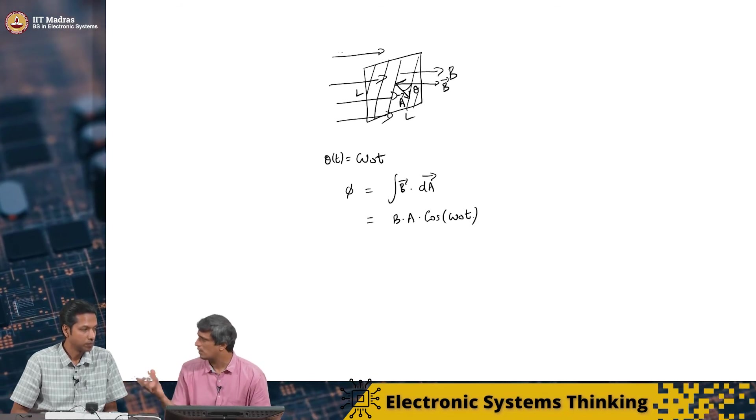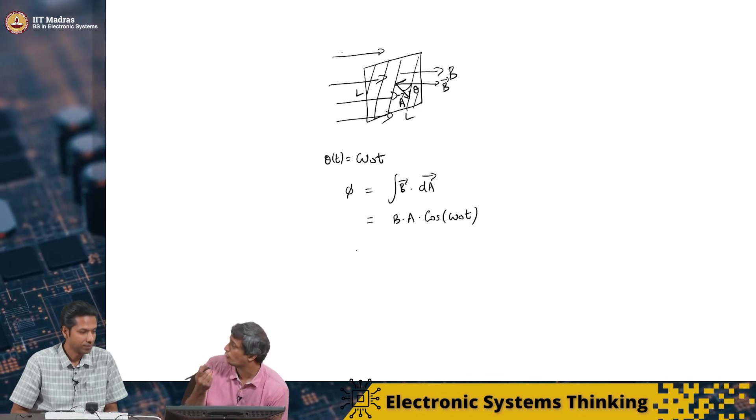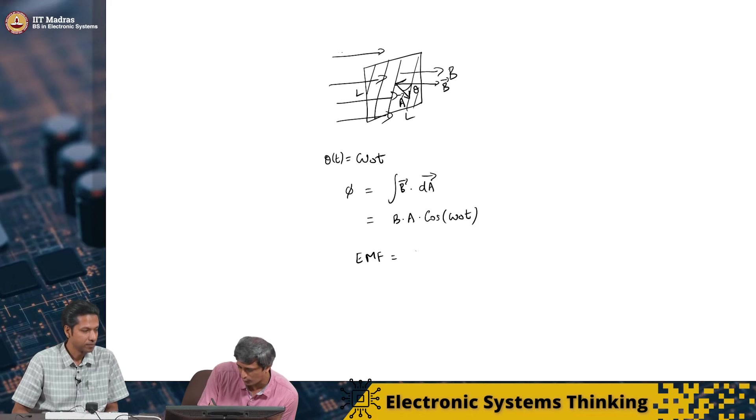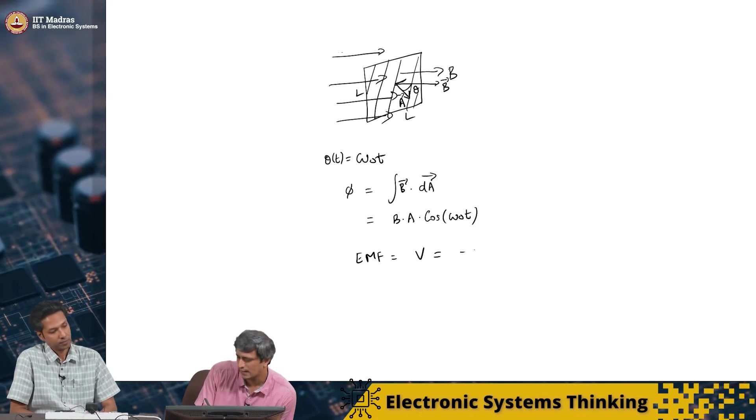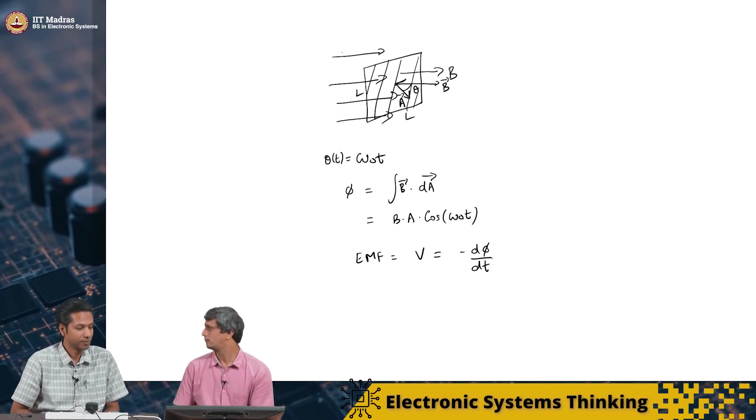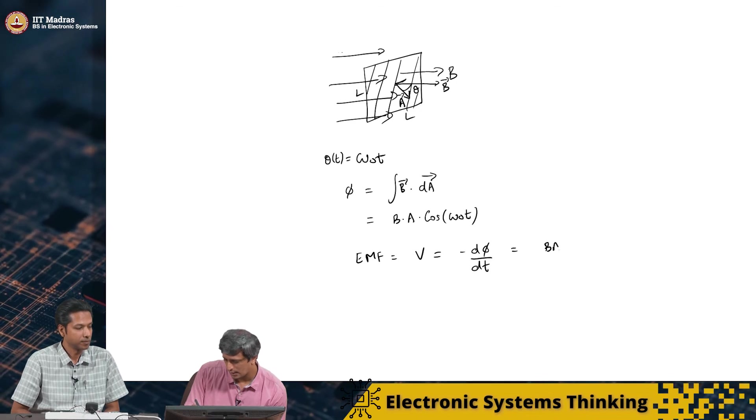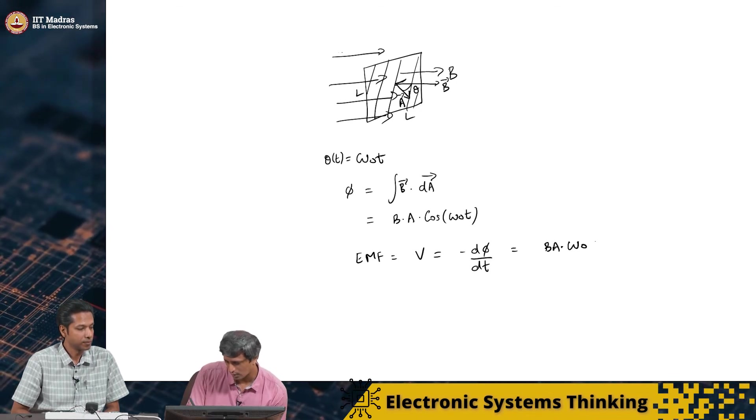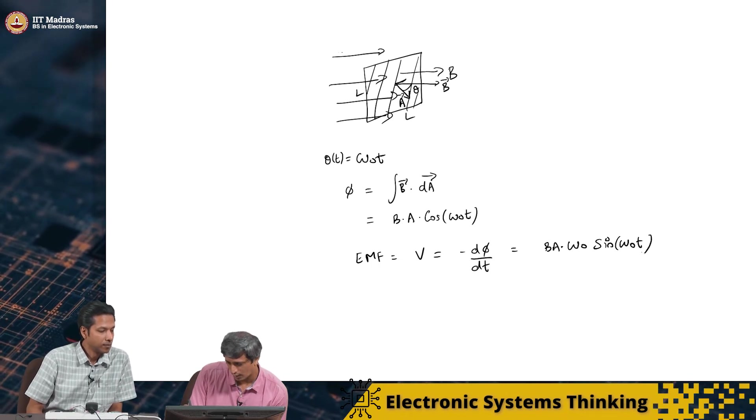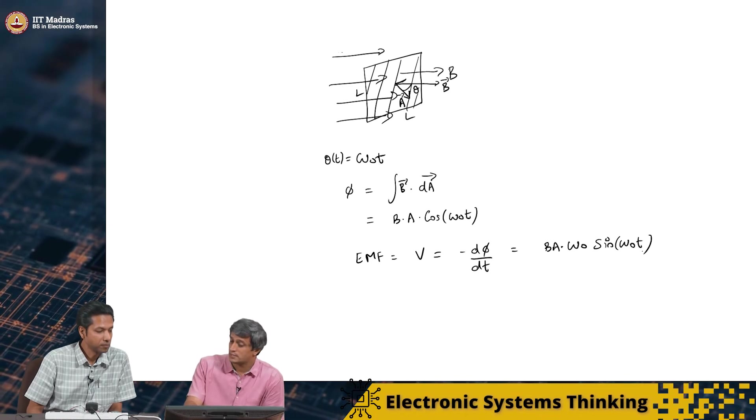So, what you now see is a fixed coil which is rotating in a magnetic field and the magnetic flux is changing with time and Faraday's law of course, tells you that this is going to generate an electromagnetic force. Right. Emf. Right. Emf equal to some voltage which is minus d phi by dt. Right. So, this essentially if you just solve, you will get B A into omega naught sine of omega naught. Ok. Right. So, this is the beauty.